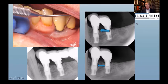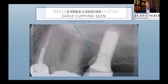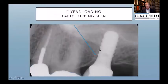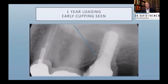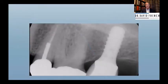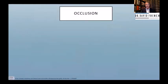What about the bite? Here's a case at stage two and at one year showing a cupping effect — no bleeding, no infection. This was a load problem, not disease-driven. We fixed it by simply adjusting the bite — took it out of occlusion — and you can see the bone came back.